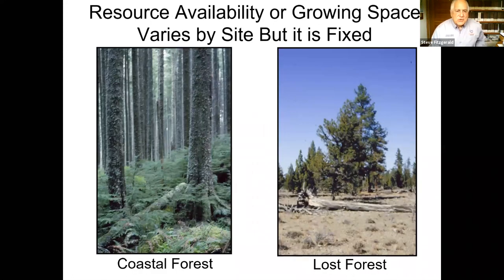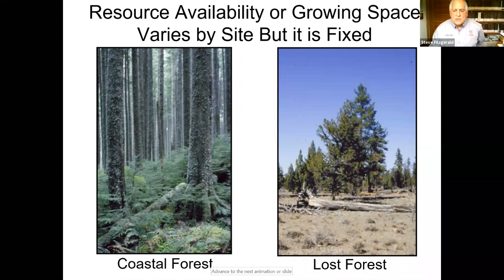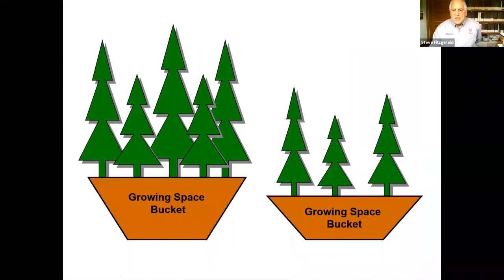One ecological truth is that the amount of resources available for trees to grow is fixed, but it does vary by site. In this coastal spruce forest with 80,000 board feet per acre, you'd manage very differently than this pine forest on the right that receives only 10 inches of precipitation. This is a fully stocked stand, and how you manage them is different based on their productivity and carrying capacity.